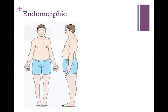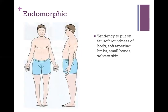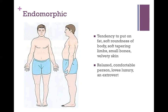The third and last body type was the endomorphic body type, or the endomorph. This person had a tendency to put on fat, with soft roundness of the body, soft tapering limbs, small bones, and velvety skin. According to Sheldon, this person was relaxed, comfortable, loved luxury, and was an extrovert.